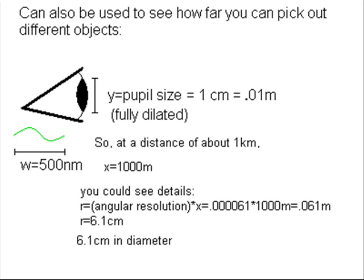So as you can see, humans can see about an object 6.1 centimeters, about the size of an apple. So we could see two apples against each other over one kilometer away.